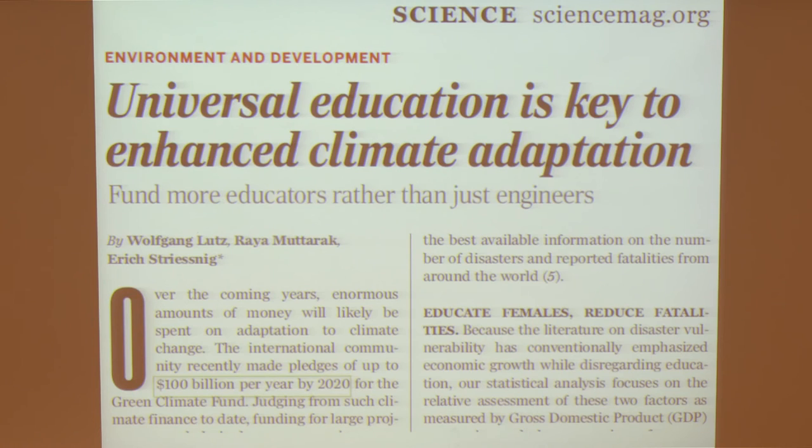The global community has agreed to spend 100 billion US dollars per year by 2020 on the Green Climate Fund helping developing countries cope with climate change. So far this money goes all to engineering projects — sea walls and other things to protect. We show that much of the money may be better invested in educating people to flexibly react when disaster strikes. Science Magazine added the subtitle: 'fund more educators rather than just engineers.' I got many angry calls from engineers and had to point out that not all the money should go to educators — but engineers should not get all of it.